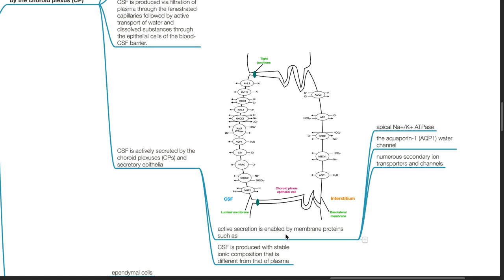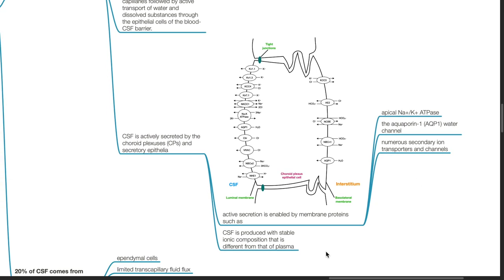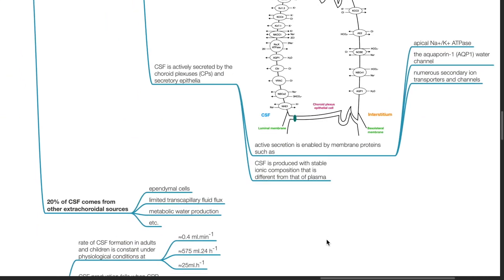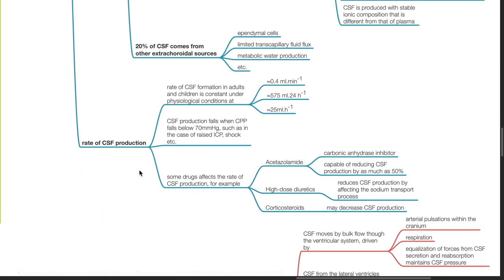Active secretion is enabled by membrane proteins, such as apical sodium-potassium ATPase, aquaporin water channel, and numerous secondary ion transporters and channels. CSF is produced with stable ionic composition that is different from that of plasma. The rate of CSF production in adults and children is constant under physiological conditions, which averages 0.4 mL per minute.